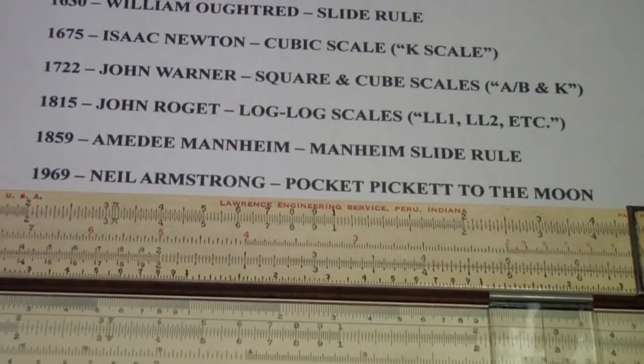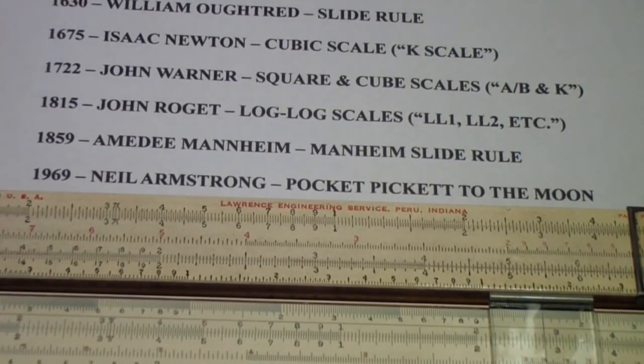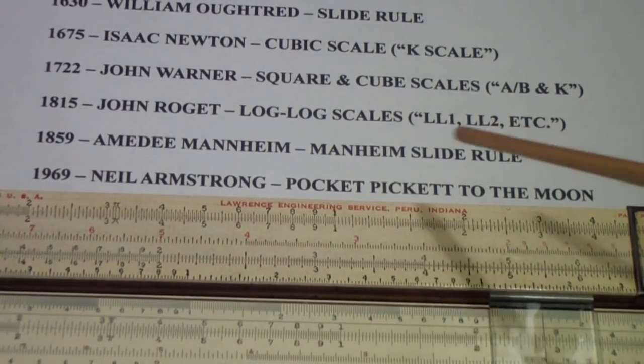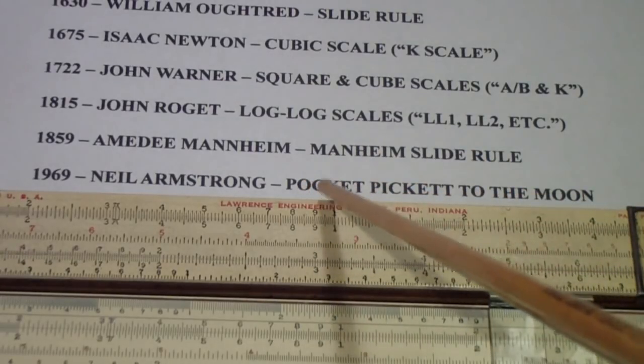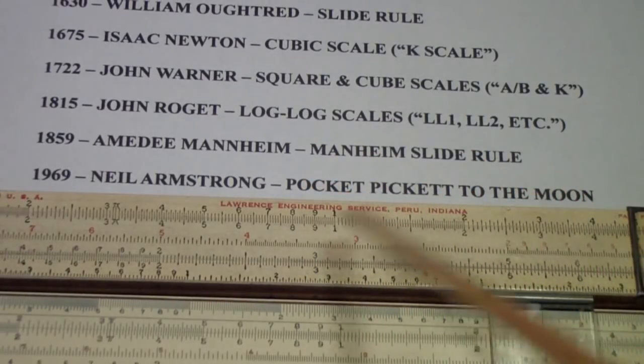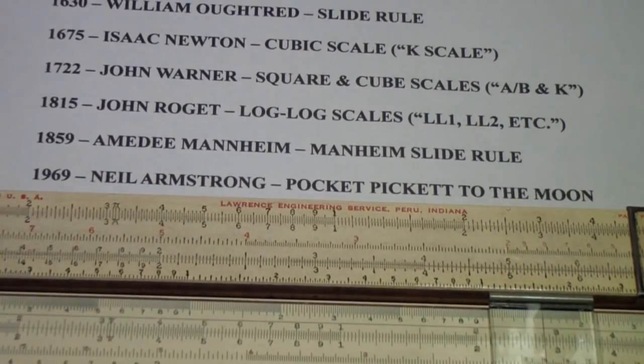But one of the most famous slide rules in the world was the Picket slide rule. It was a pocket slide rule, and that's why I call it the pocket Picket to the moon, because Neil Armstrong carried a slide rule, not just for nostalgia purposes, but actually to do computations. They did what were called delta-v computations, which means computing how long to burn a rocket to change the velocity of the space probe, the moon mission, so that it would make course corrections.